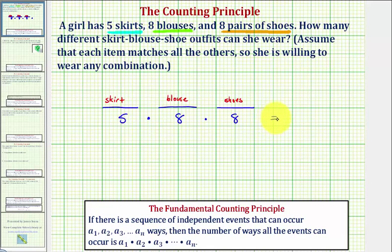So this product will give us the total number of skirt, blouse, shoe outfits or total number of outcomes. Five times eight times eight is equal to three hundred twenty. So we have three hundred twenty possible outfits.